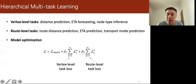For route-level tasks, we extract route distance, ETA, and transport mode as supervision signals. Finally, we jointly optimize both main recommendation tasks and auxiliary tasks.